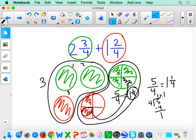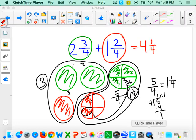So now when I take my 1 and 1 fourth and my 3 wholes and put them together, I see that my answer is 4 and 1 fourth.